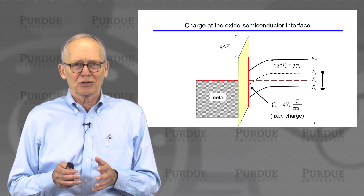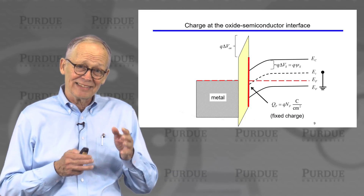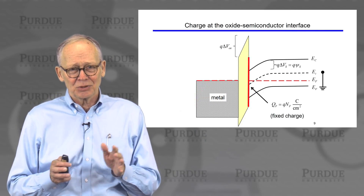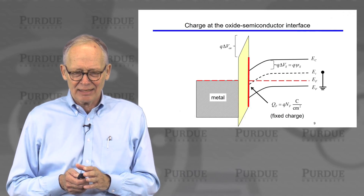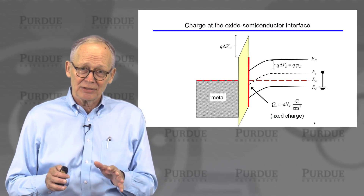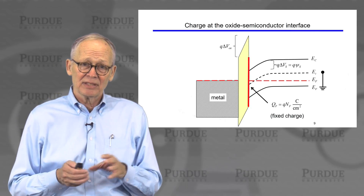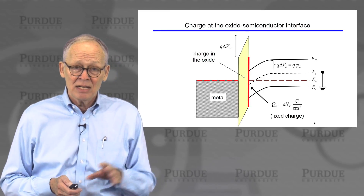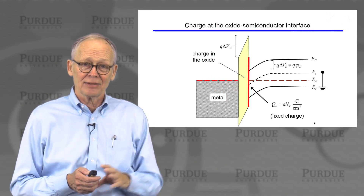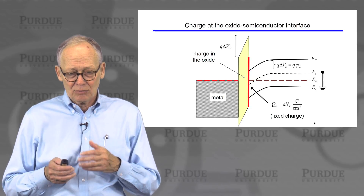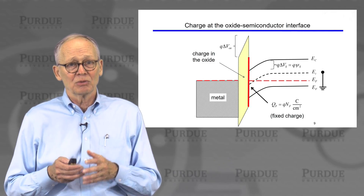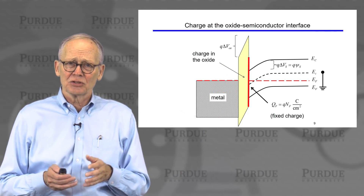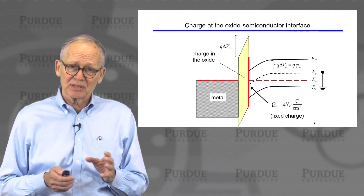There may be other charges as well. There are charges called fast charges, due more to the dangling bonds at the interface — as we change the bias, the charge changes, which distorts the CV characteristic. It's not an important factor in modern silicon MOS structures, but in some exploratory devices it can be. There could also be charge in the oxide itself. In the early days of MOS there was a lot of that, but over the years a lot of work has been done to grow clean oxides with no charge in them. It's not a factor in today's devices unless you're working on novel devices out of other material systems.